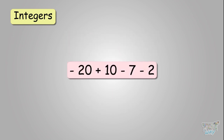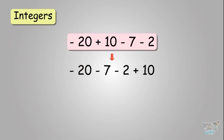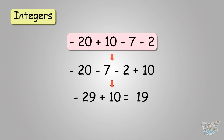Next: minus twenty plus ten minus seven minus two. Group the numbers with like terms: negative twenty minus seven minus two plus ten. Add all the numbers with the same sign — you get negative twenty-nine. Then negative twenty-nine plus ten — with different signs you subtract. You get nineteen, but this becomes negative because twenty-nine is the larger number. So the answer is negative nineteen.